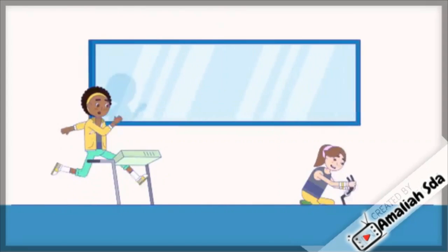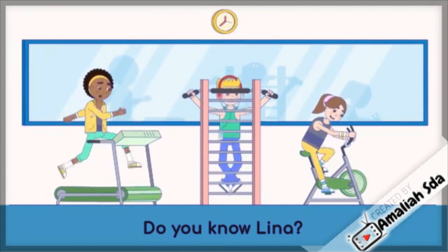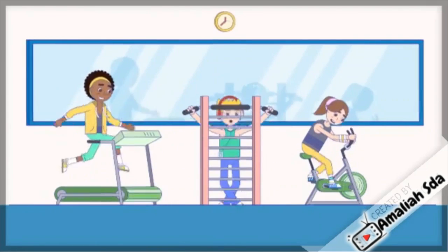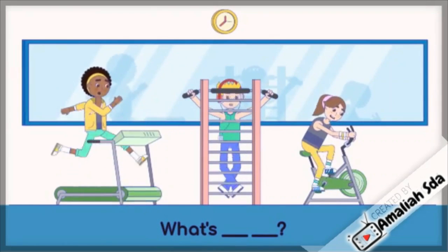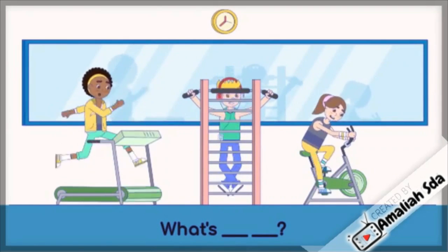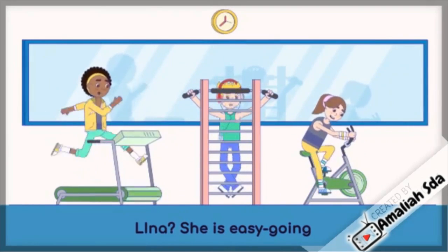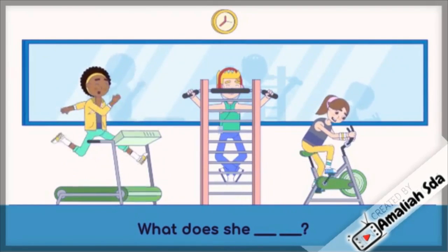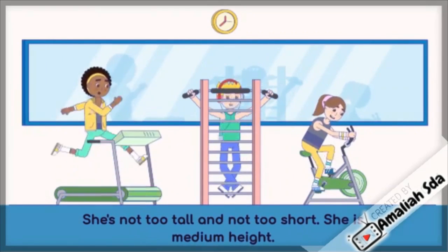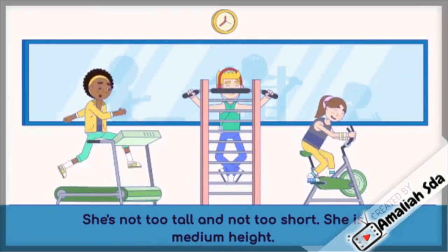Question number one. 'Do you know Lena?' 'Yes, I do.' 'What's she like?' 'Lena? She is easygoing.' 'What does she look like?' 'She's not too tall and not too short — she is medium height.'